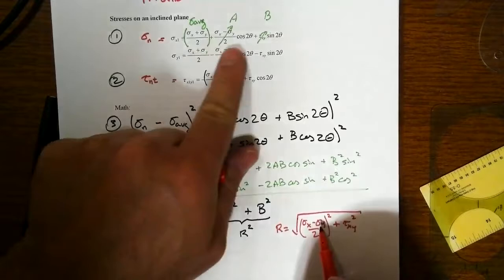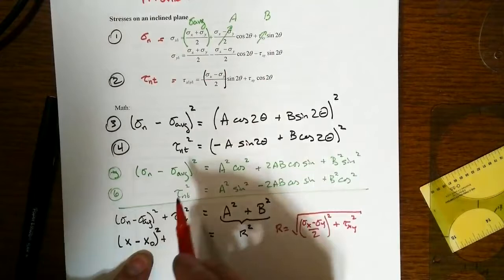These are things we start the problem off with, sigma X and sigma Y. They're on this right-hand side of our expression up here, and we know the tau X too. Over here, the sigma average, well, that's also a known quantity.